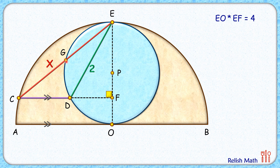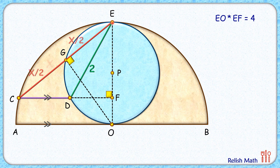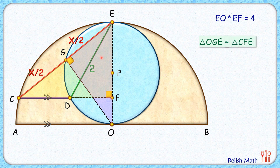Now let's join GO. EO is the diameter and the diameter always subtends an angle of 90 degrees, so angle G is 90 degrees. CE with respect to the bigger semicircle is a chord, and from the center we have drawn a perpendicular on the chord. By theorem, the perpendicular drawn from the center on a chord bisects the chord, so CG and GE will both be x over 2. Now looking at triangle EGO and triangle CFE: angle E is common in both and both have 90-degree angles, so both triangles are similar.